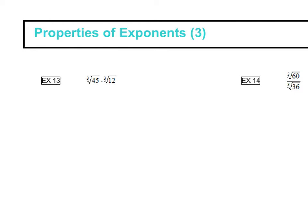Alright, so we are continuing with our exponent properties. Here we are looking at multiplication between two cube root numbers. Similar to what we've seen with square root, it works the same way with cube root. You can go ahead and multiply the 45 and the 12 together and put those underneath one radical.